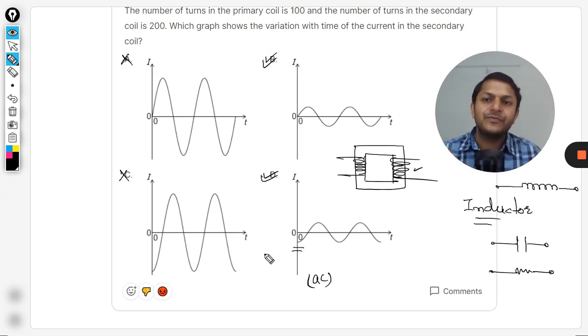My dear students, B is wrong, D is correct. Let me tell you - in the case of resistor there is no difference between the primary current and the output current. But when there is an inductor, the output current is lagging.